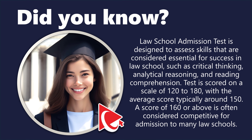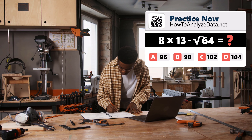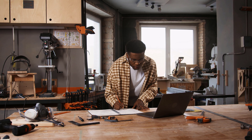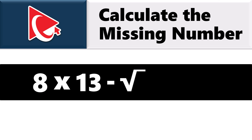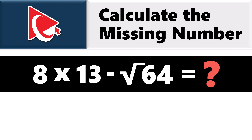This particular test question is very tricky, but through its simplicity. Understanding this question is like trying to assemble IKEA furniture without the instructions. You are presented with the equation 8 multiplied by 13 minus the square root of 64, and you need to calculate the result of this expression, which should be selected out of four possible choices.